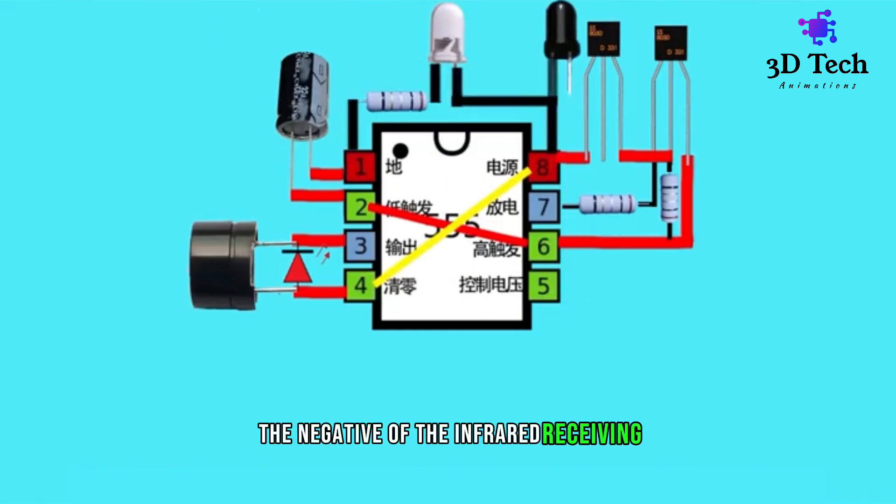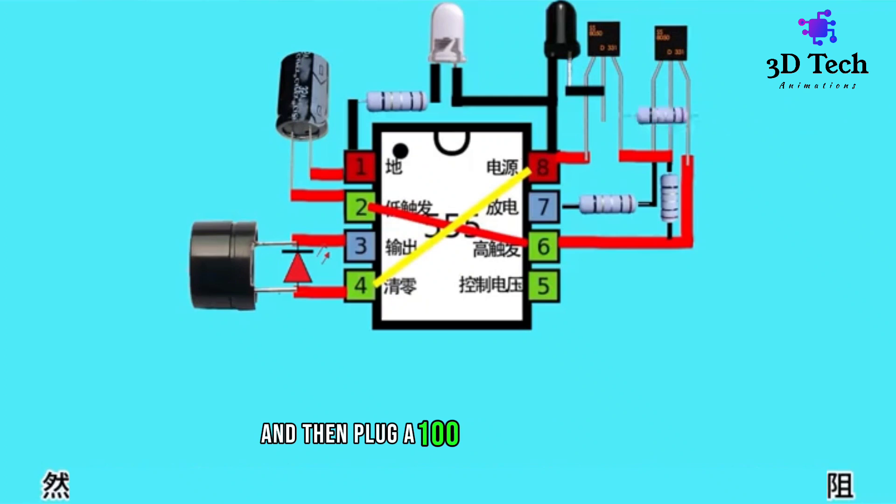The negative of the infrared receiving LED is connected to the pin 8, positive connected to transistor base. And then plug a 100 kilo ohm resistor between pin 1 of the chip and the transistor base. And now this circuit is completed.